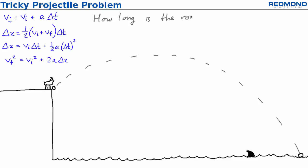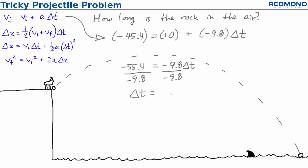Now Billy needs to know how long the rock is in the air. He tries the first equation, v final y is equal to v initial y plus ay times delta t. Everything is known except delta t, so Billy substitutes the values and solves, getting delta t is equal to 5.65 seconds.